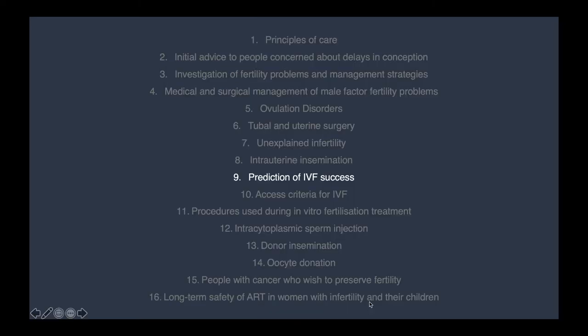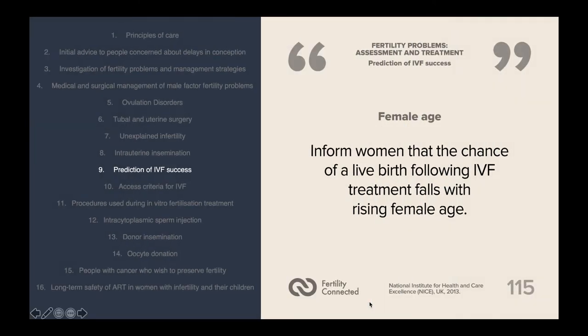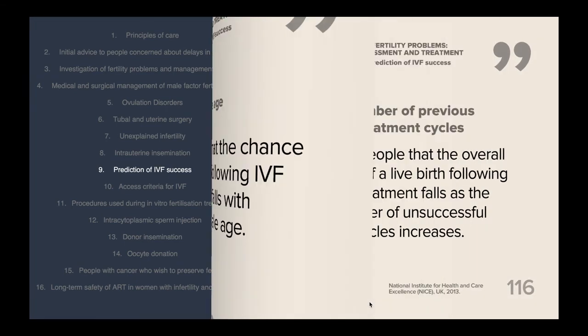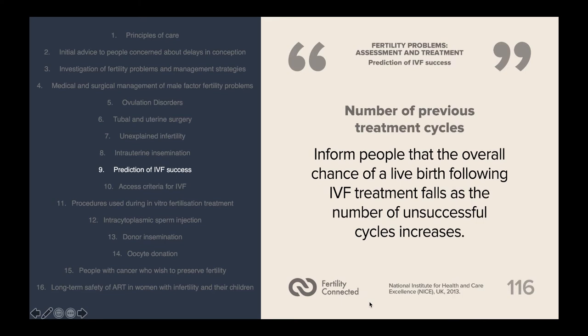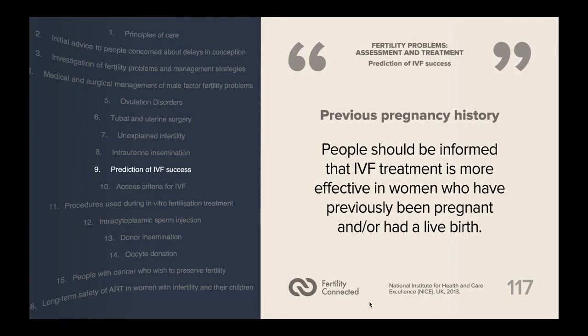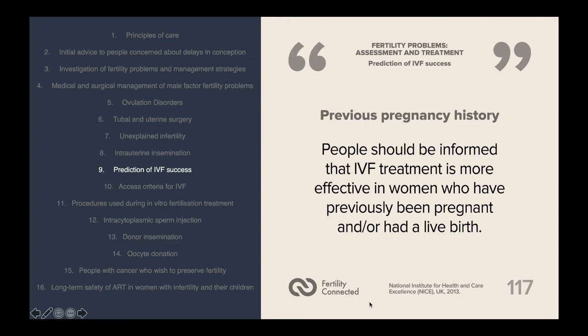In chapter nine, we discuss factors involved in prediction of IVF success. Female age is very important: the chance of a live birth following IVF treatment falls with rising female age. The number of previous treatment cycles is also a factor. IVF treatment is more effective for women who have previously been pregnant and/or had a live birth.